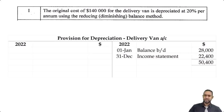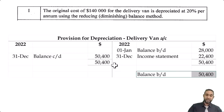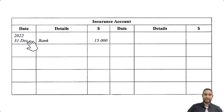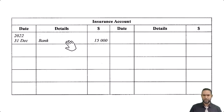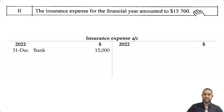We balance off the account. The total on the credit side is $50,400. There are no entries on the debit side, so we put balance carried down at $50,400 and bring the balance down. That's item one done. Item two says the insurance expense for the financial year amounted to $15,700. In the insurance account there is a debit entry showing bank $15,000 — that's the payment made for insurance during the year.